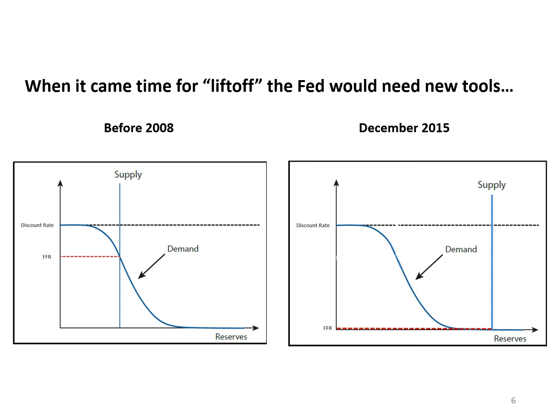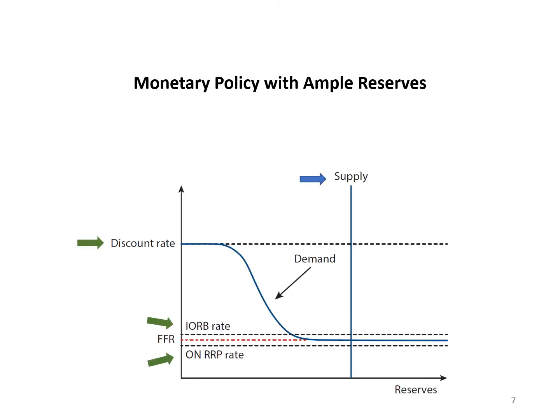At that point, the Fed decided it was time to turn to new tools. The framework is called an ample reserves regime, because the supply of reserves is large enough so that small movements in supply don't affect the federal funds rate. At liftoff in December 2015 and today, the Fed relies on its administered interest rates to encourage market rates to move higher or lower. The green arrows point to the Fed's three administered rates. The blue arrow represents the role of open market operations, which the Fed uses occasionally to ensure reserves remain ample.